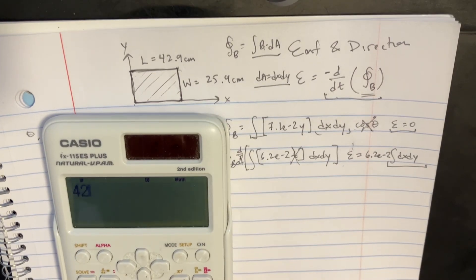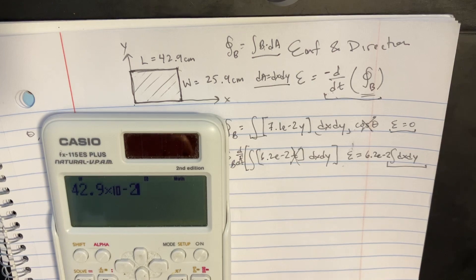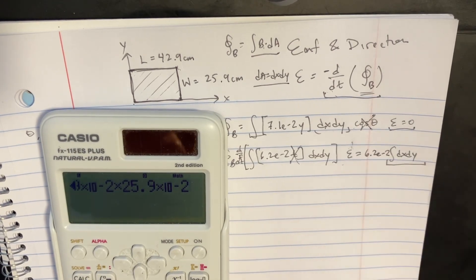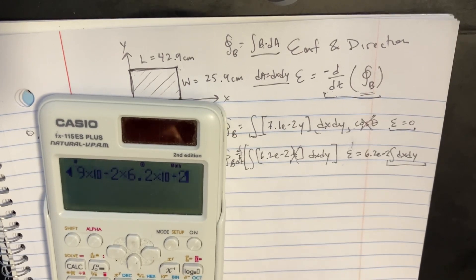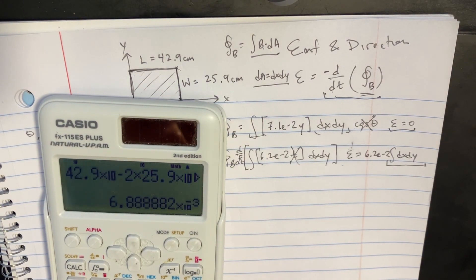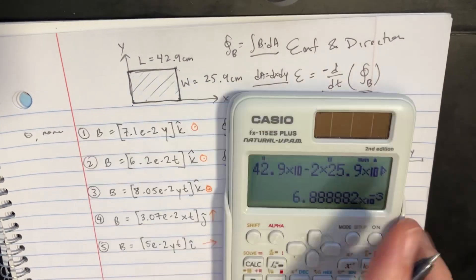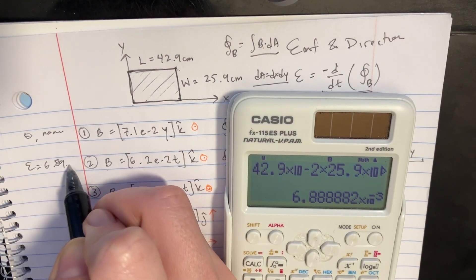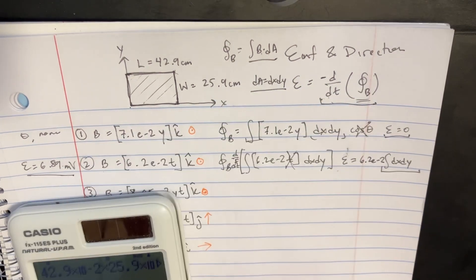That would be 42.9 negative 2 times 25.9 negative 2, and then you multiply that by 6.2 negative 2. So in this particular case, the EMF is 6.89, and then that would be millivolts.